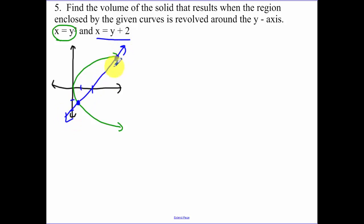Finding your points of intersection. I'm going to set those guys equal to each other. So I set y squared equal to y plus 2. y squared minus y minus 2 equals 0. We have y minus 2, y plus 1. So we have y equals 2 and negative 1. So my integral is going to go from negative 1 to 2.